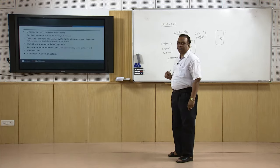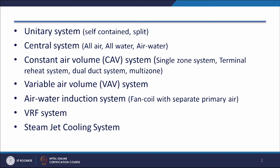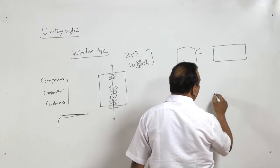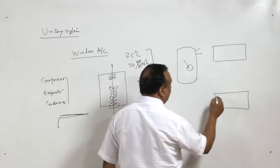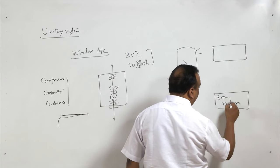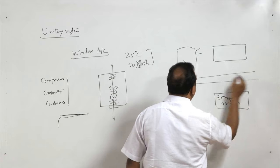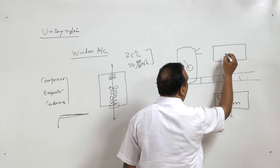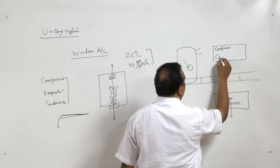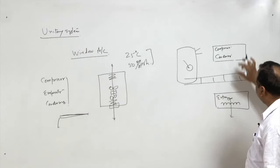Another type of unit in a unitary system is the split type system. In the split system, there is a split between the high pressure side and the low pressure side — there are two units. One unit has only the expansion device, evaporator coil, and a fan which blows air over the evaporator coil. This is the inside unit. Outside this, connected through the wall, is the outside unit which has the compressor and condenser, with a separate fan for each unit.